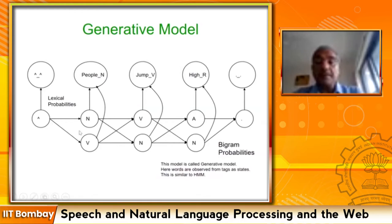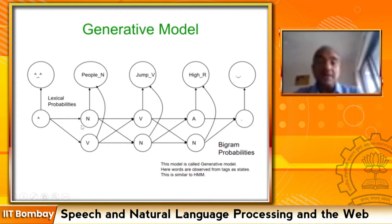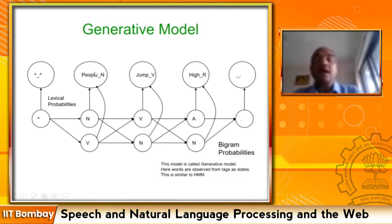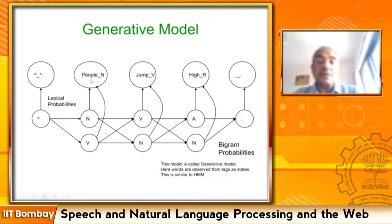We have placed all possible tag sequences and created an automaton going from the start state (^) to end state (.) — from state to state we have transitions. These transitions are probabilities obtained from corpus statistics, and the observation (lexical/emission) probabilities, which are word given the state, are also obtained from the corpus.